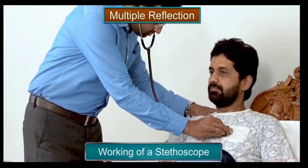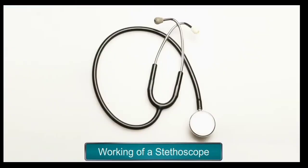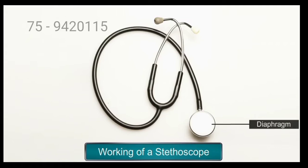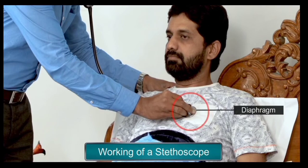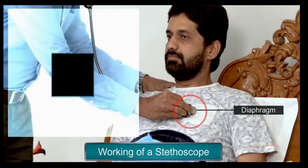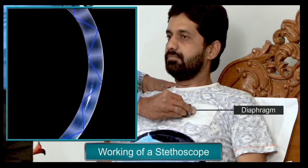Let's take a look at how it works. The chest piece of the stethoscope consists of a plastic disc called the diaphragm, which is placed on the patient's body. The sound of the heartbeat vibrates the disc. These vibrations produce pressure waves, which travel to the listener's ears through the hollow tubes by a series of multiple reflections throughout the tubes.